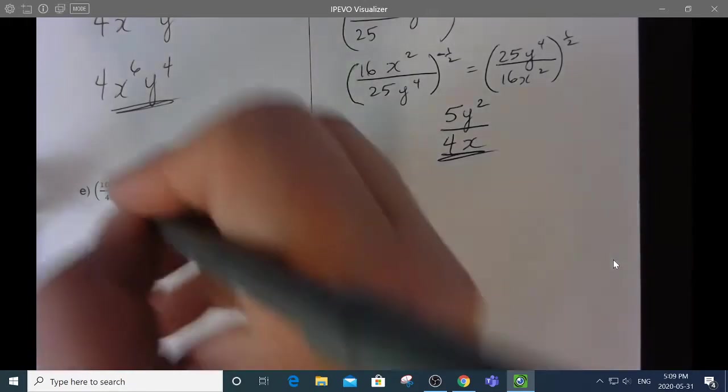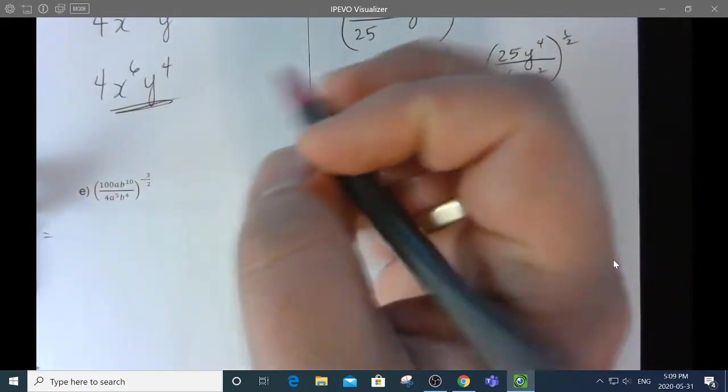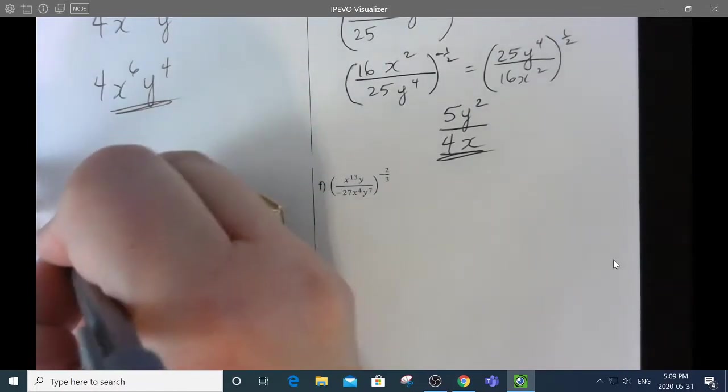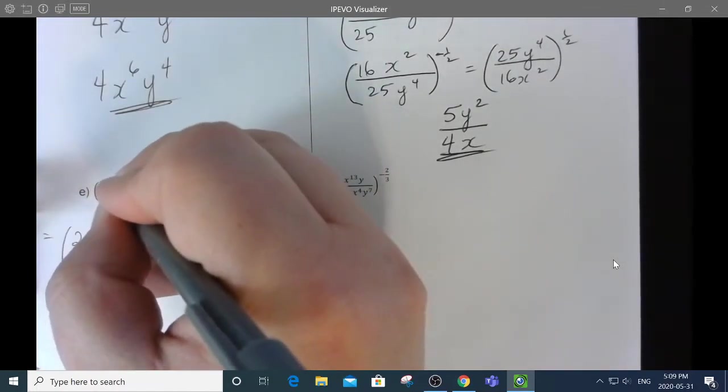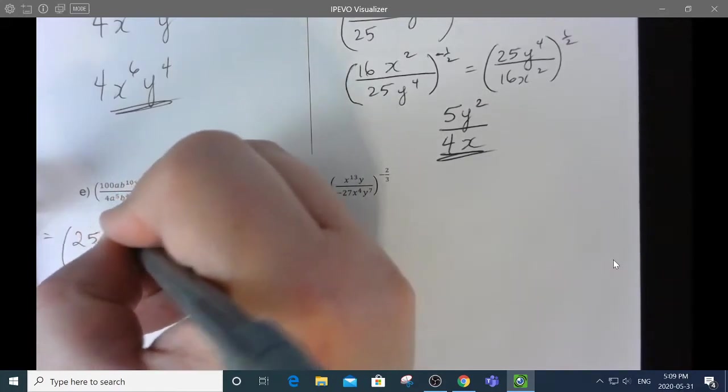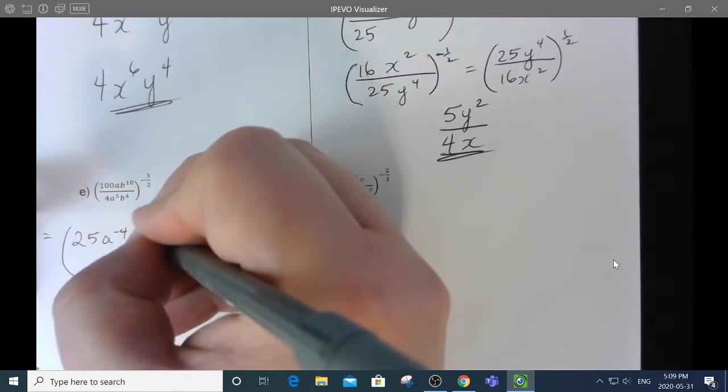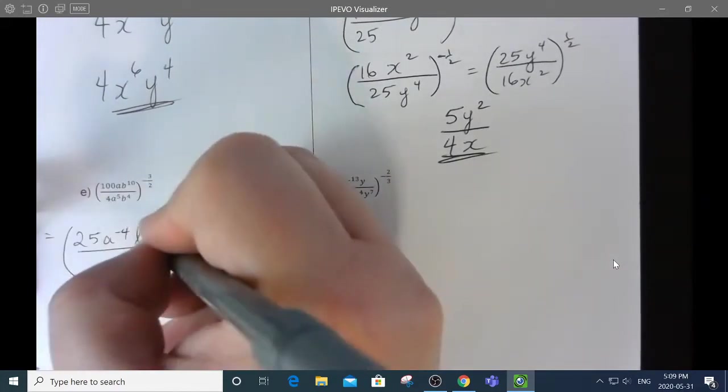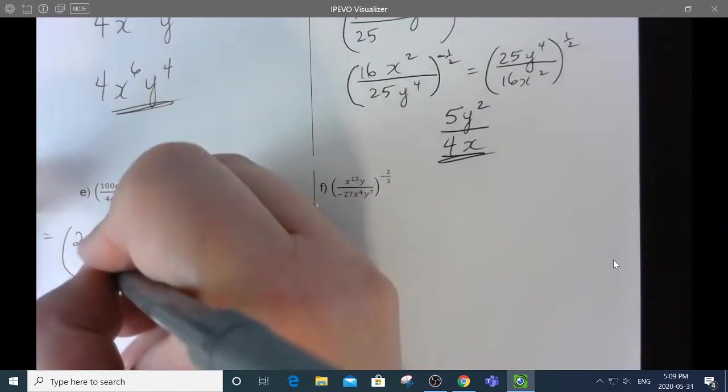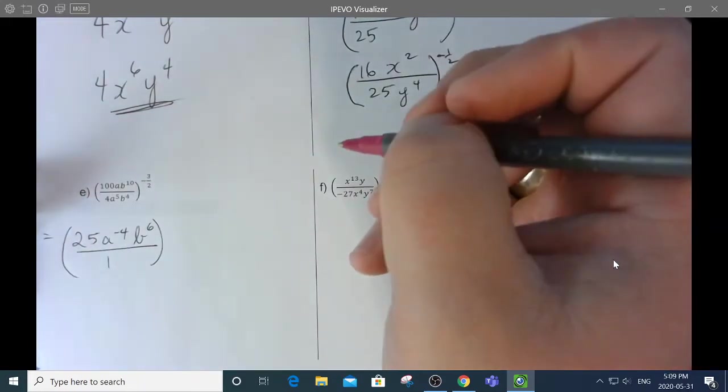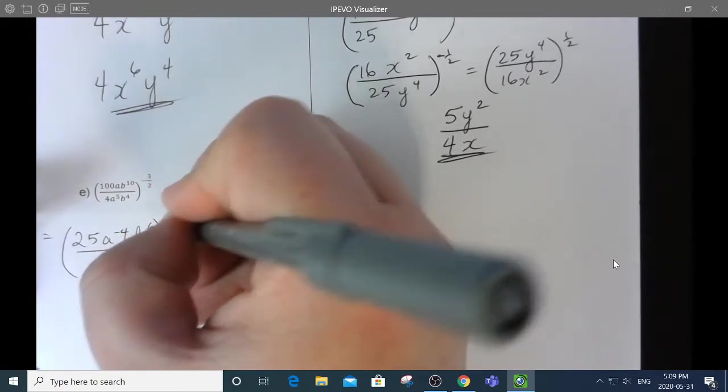Did you try them? Step 1 for me is I like to simplify what's inside the brackets first. So, that's going to be 25. That's going to be 1 minus 5 is a to the negative 4. 10 minus 4 is b to the 6. And on the bottom, I have nothing. I have a 1 because the 4 went into 100. So, that's to the negative 3 halves.